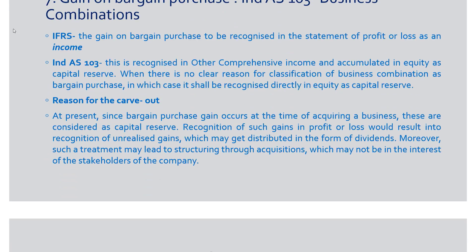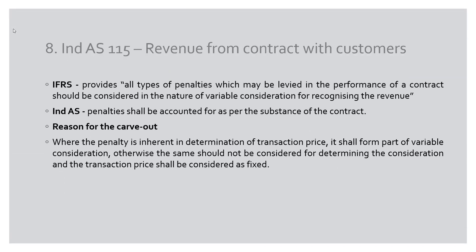Let's move to the next carve-out, which is on Ind AS 115 dealing with revenue from contracts with customers. This standard was notified in March 2018 and replaces all existing standards for revenue recognition and construction contracts. IFRS says that all types of penalties levied in the performance of a contract should be considered as variable consideration for recognizing revenue. I'll cover variable consideration and Ind AS 115 in detail in coming videos.